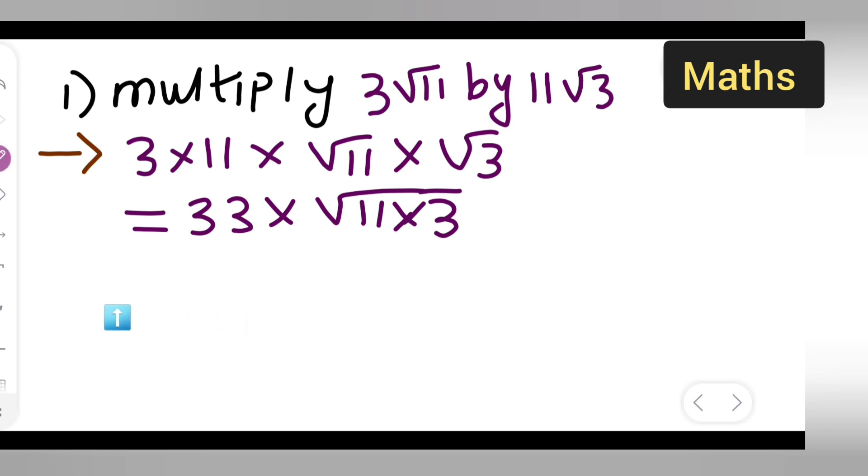33 multiplied by root 33, because 11 times 3 is 33. So when you multiply the roots together, you get root 33.